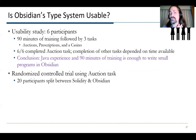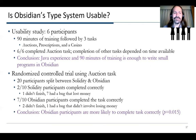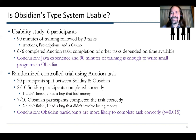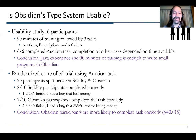We also did a randomized controlled trial using the auction task — 20 participants split between Solidity and Obsidian. Only two of the 10 Solidity participants completed the task correctly: nine out of 10 finished, but some had a bug that lost money. Whereas seven out of 10 Obsidian participants completed the task, and only one was buggy — a bug our type system couldn't find, where they refunded money to the wrong person. Unless you have a proof system that completely proves something correct, you can still have some bugs. But many more of our participants completed correctly, which showed some success in our endeavors.